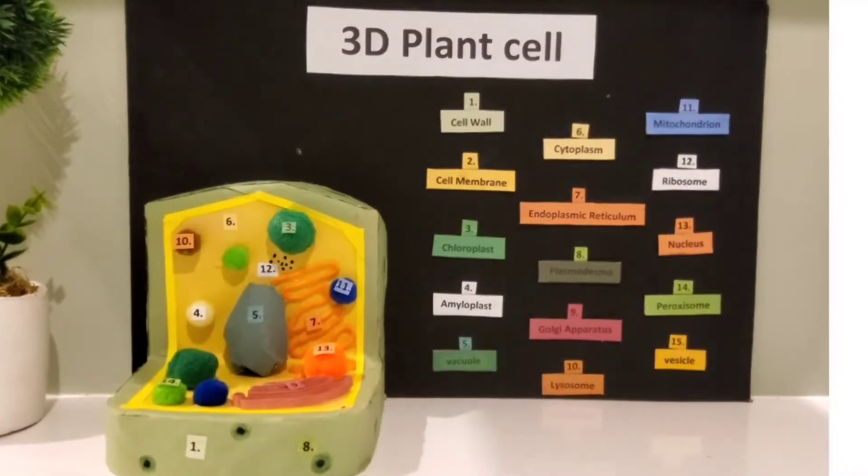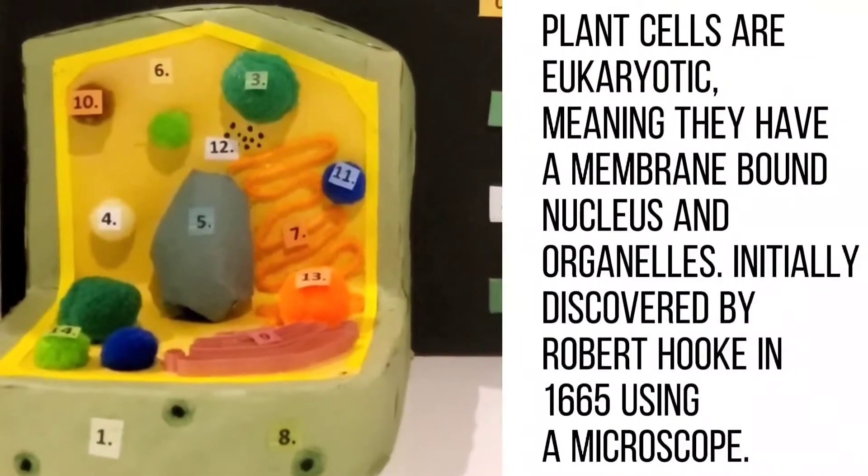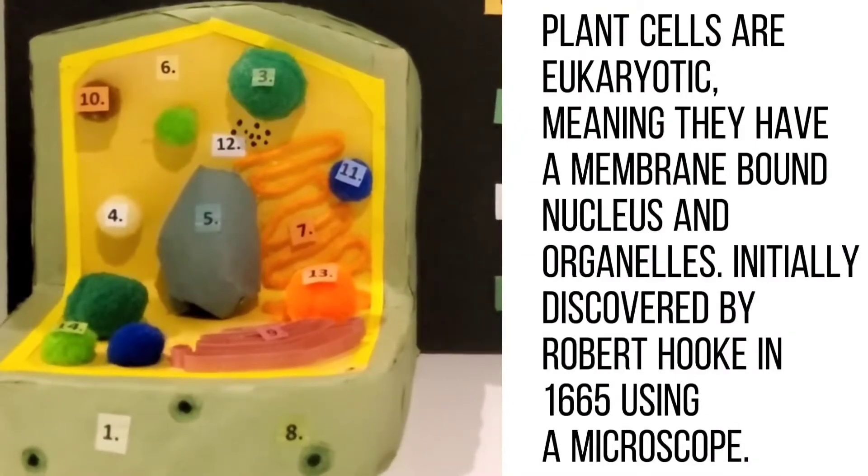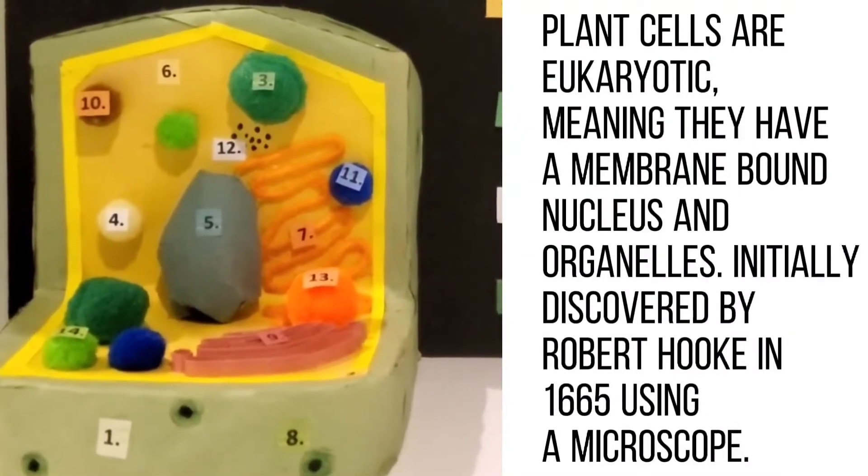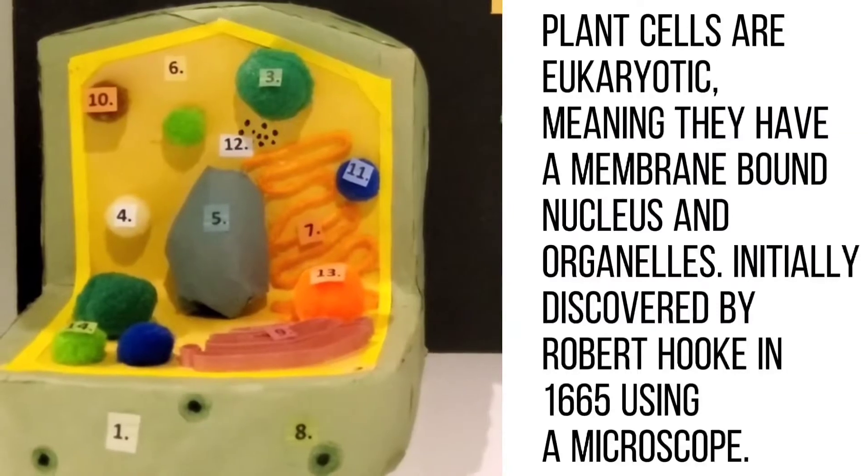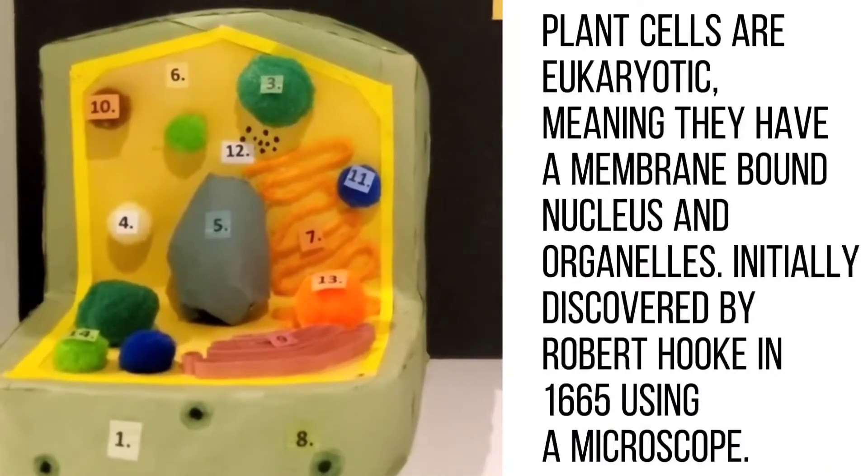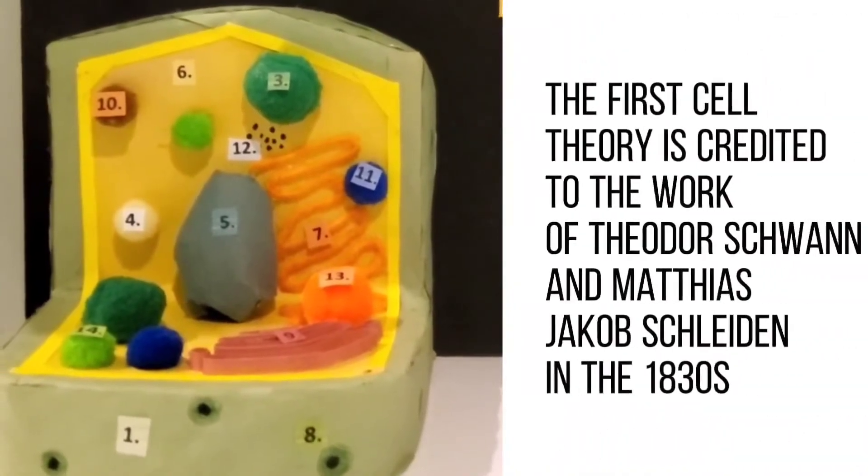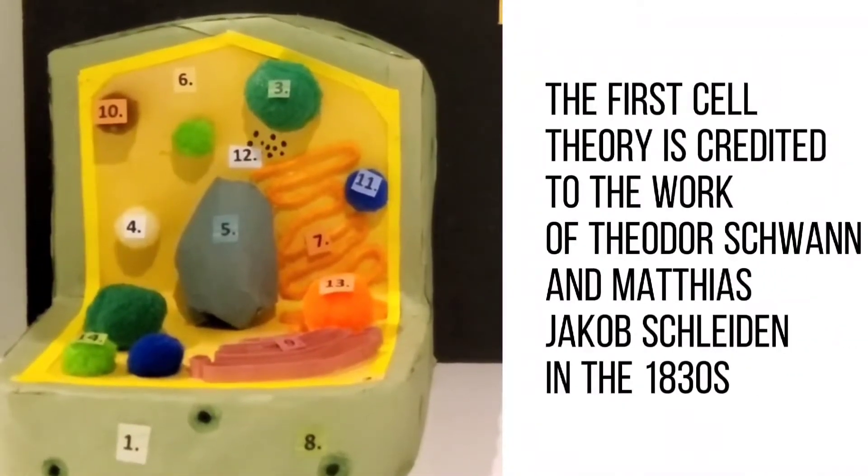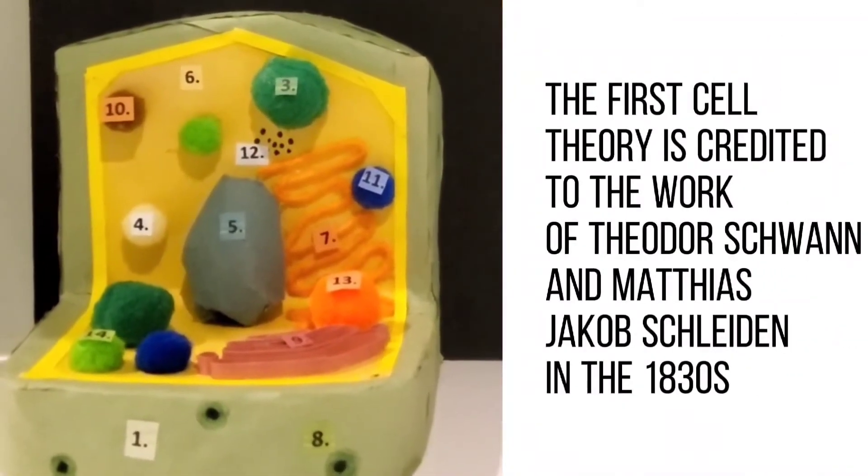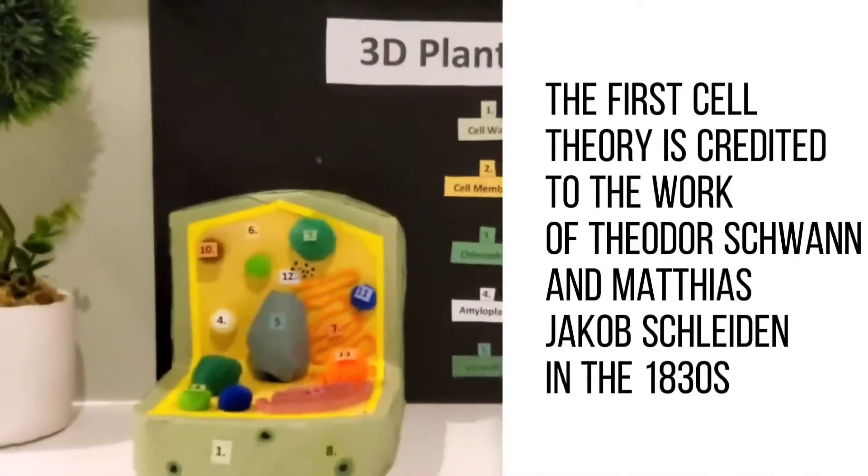Plant cells are eukaryotic, meaning they have a membrane-bound nucleus and organelles. It was initially discovered by Robert Hooke in 1665 using a microscope. The first cell theory is credited to the work of Theodore Schwann and Matthias Jacob Schleiden in the 1830s.